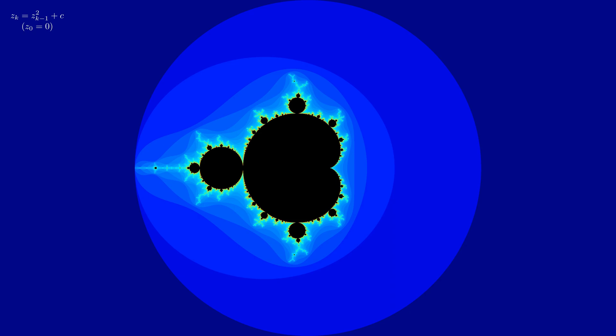The Mandelbrot set is the set of all complex values C for which the absolute value of the recursive sequence stays bounded. The picture on the screen is a visual representation of that set. Every pixel in this picture corresponds to a complex value.